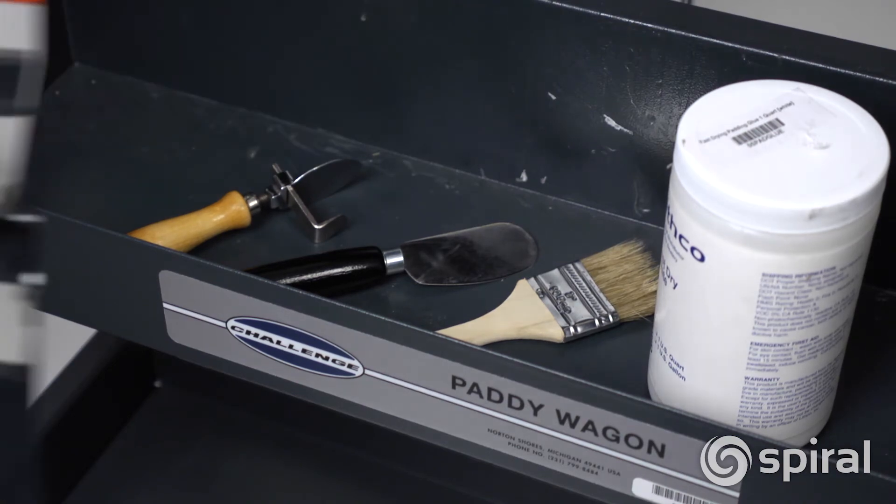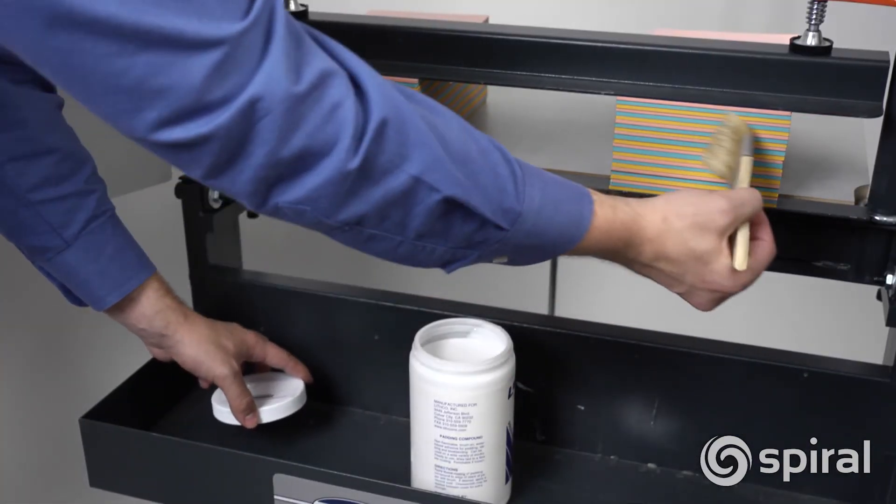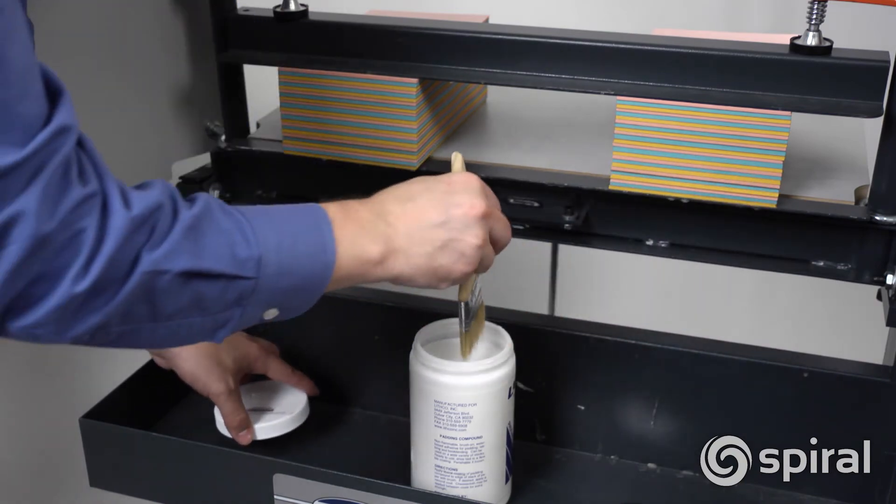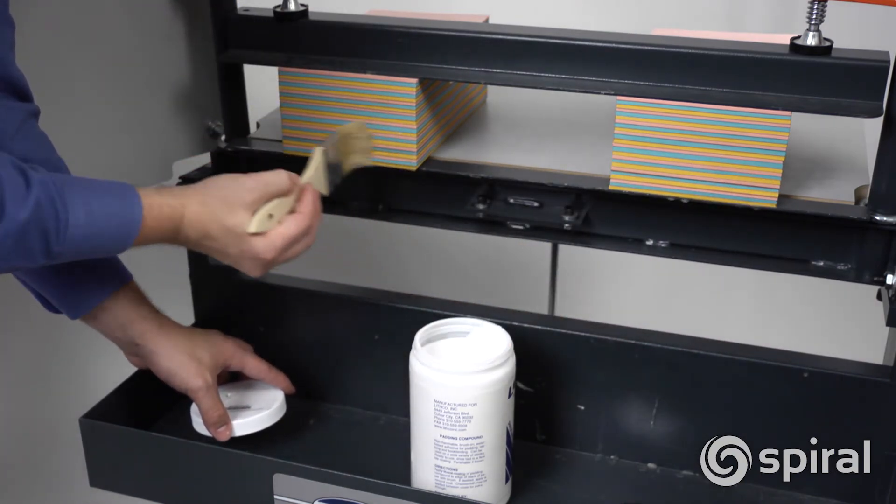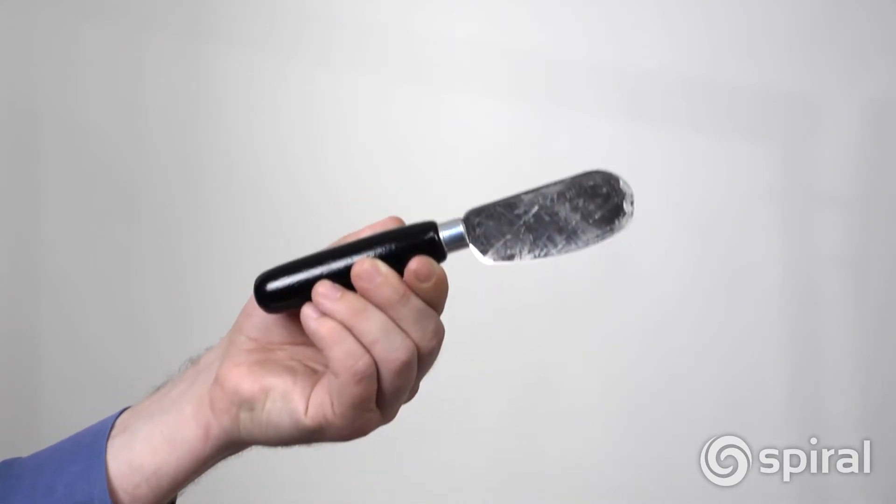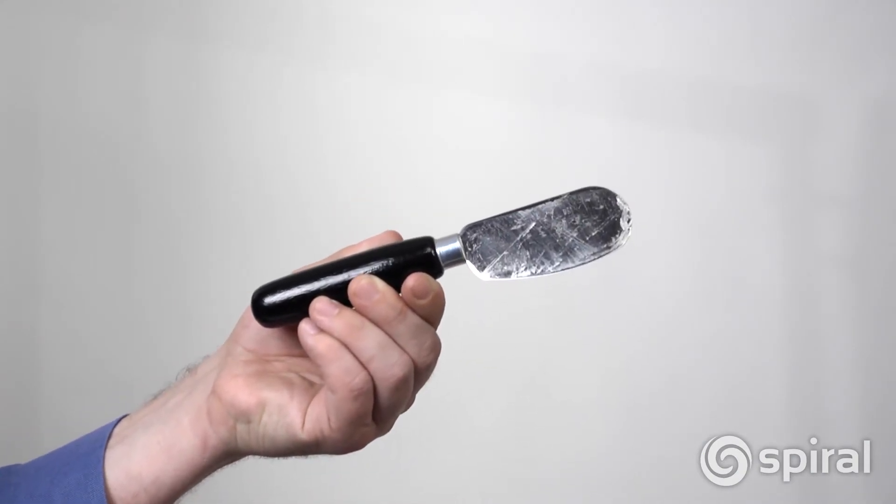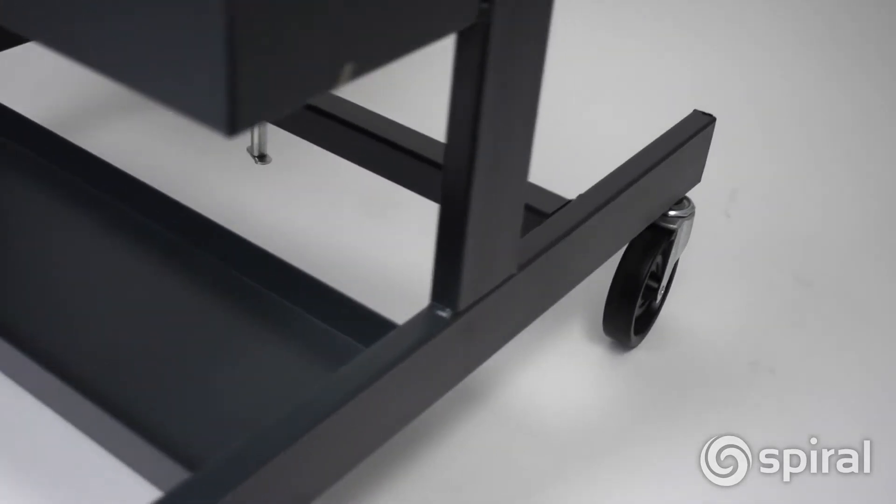The table edge and clamping bar are designed to reduce padding compound buildup, and any excess compound is easily removed with your padding knife. The Paddy Wagon has large-diameter casters that allow you to roll it to the cutter, folder, or wherever the action is.